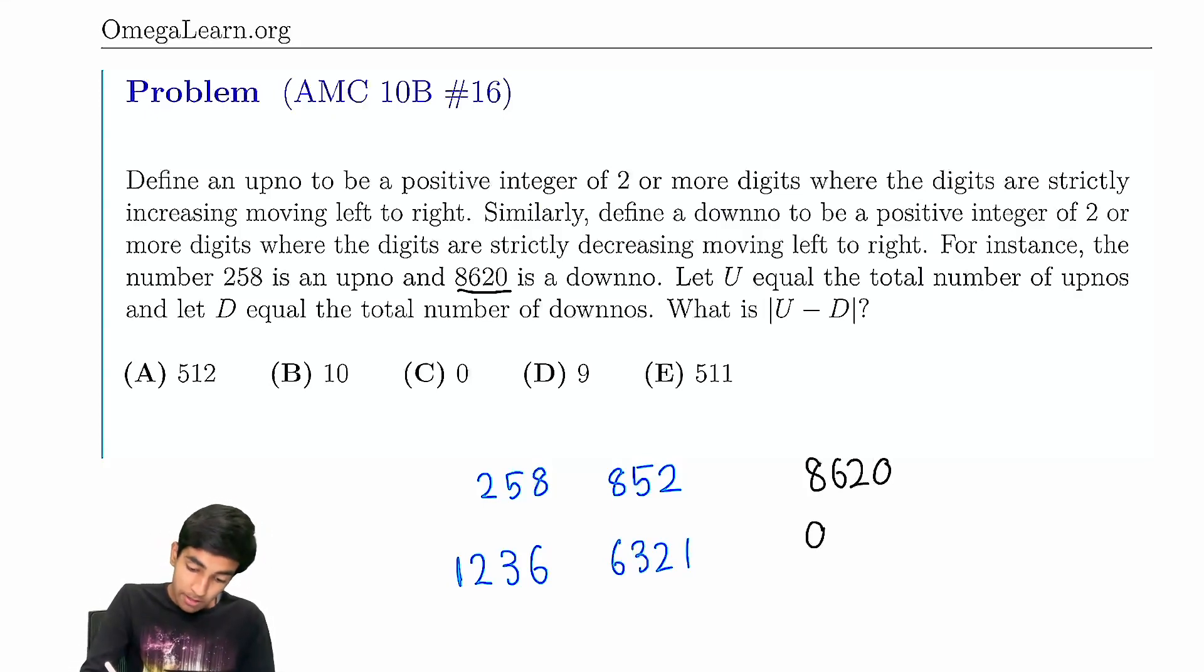But if you flip its digits, we get 0268, which is not an upno because 0268 is not a four digit number. So this doesn't count.